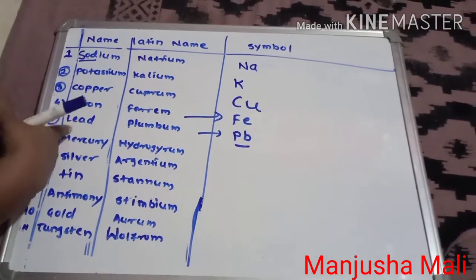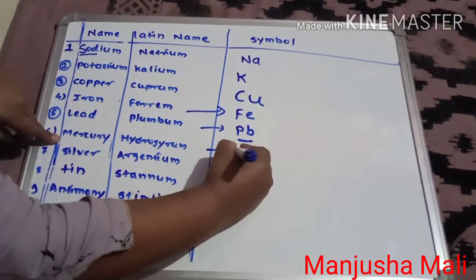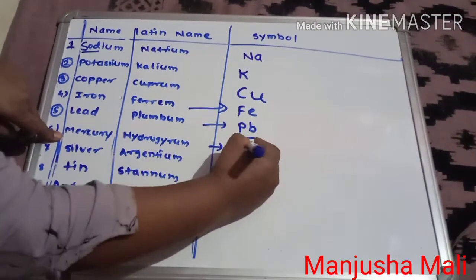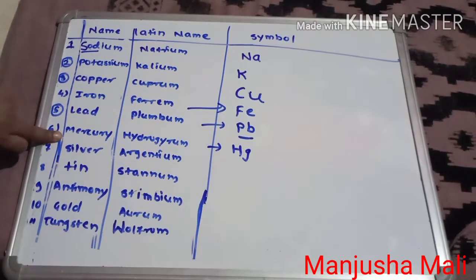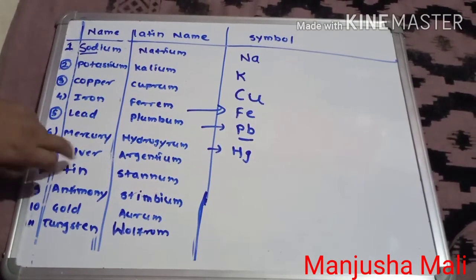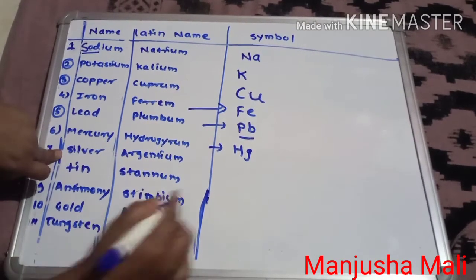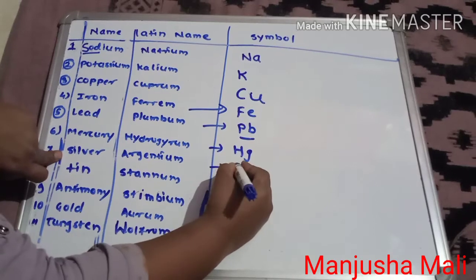Mercury. Mercury, the Latin name is Hydrargyrum. Hydro is H and gyrum is G, so symbol of mercury is Hg.